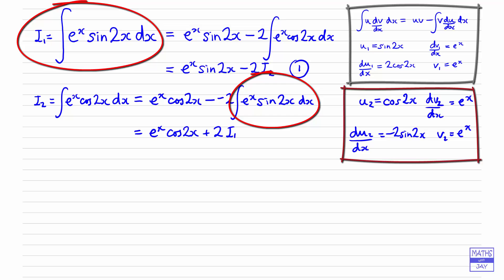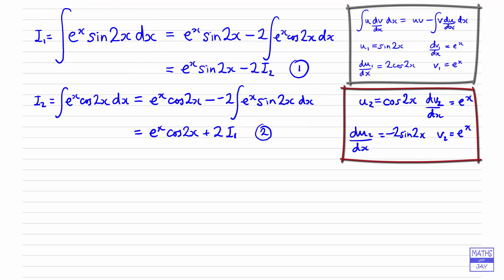We're trying to find the integral of e^x sine 2x, and we can see that integral has reappeared. Let's call this equation 2. So equation 1 gives us i1 in terms of i2, and equation 2 gives us i2 in terms of i1. We've finished integrating — all we need now is a bit of algebra: substitute one equation into the other to find the actual integral we want.